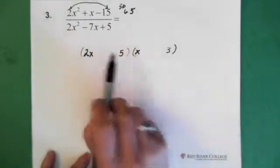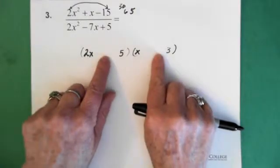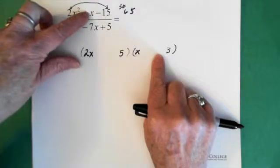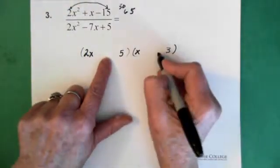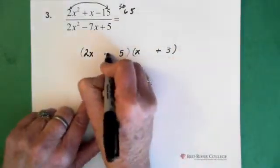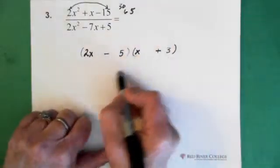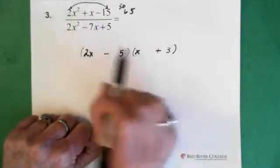Now I have to think about the sign. I see that it's negative here. So that tells me the signs are different. I also notice that I end up with a +x here. So I'm assuming that it's a plus here and a negative here. And the reason for that is this gives me 6x. This gives me -5x. So that's going to add up to the x.